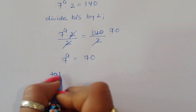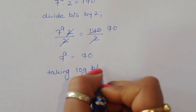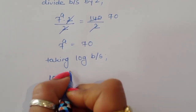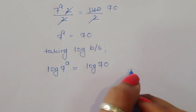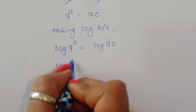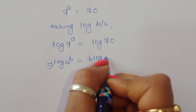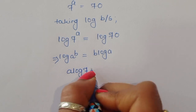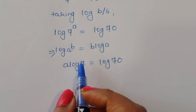Now we have to find the value of a, so we take log of both sides. We get log of 7 power a is equal to log of 70. We know the formula: log of a power b is equal to b times log of a. Using this formula, we get a times log of 7 is equal to log of 70.